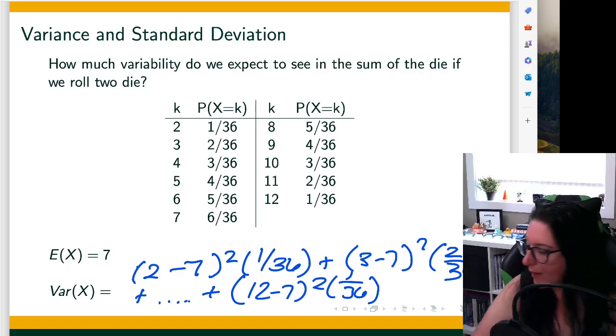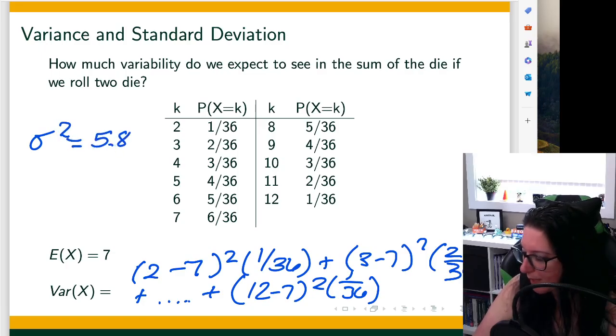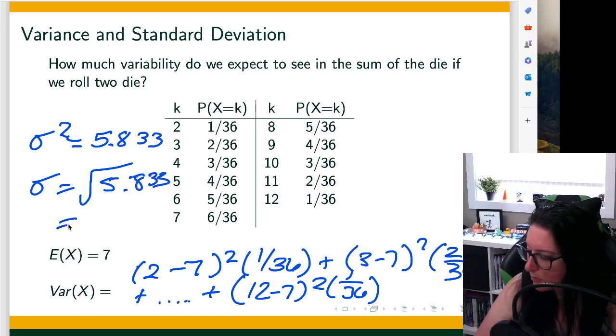That gives us a sigma squared equal to about 5.833, and then standard deviation is the square root of that, which is about 2.415 or so.